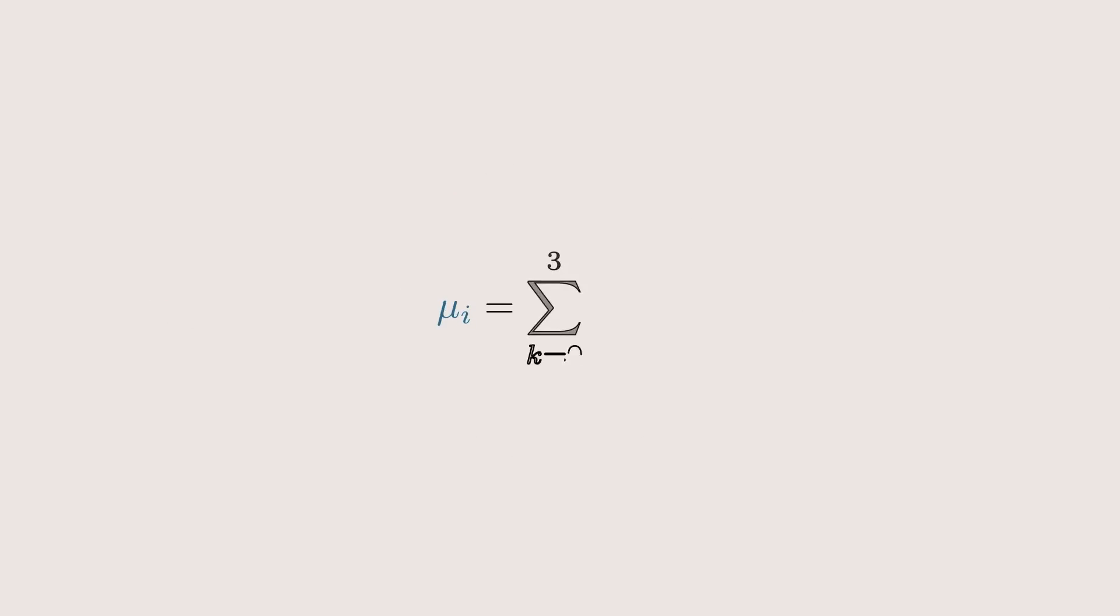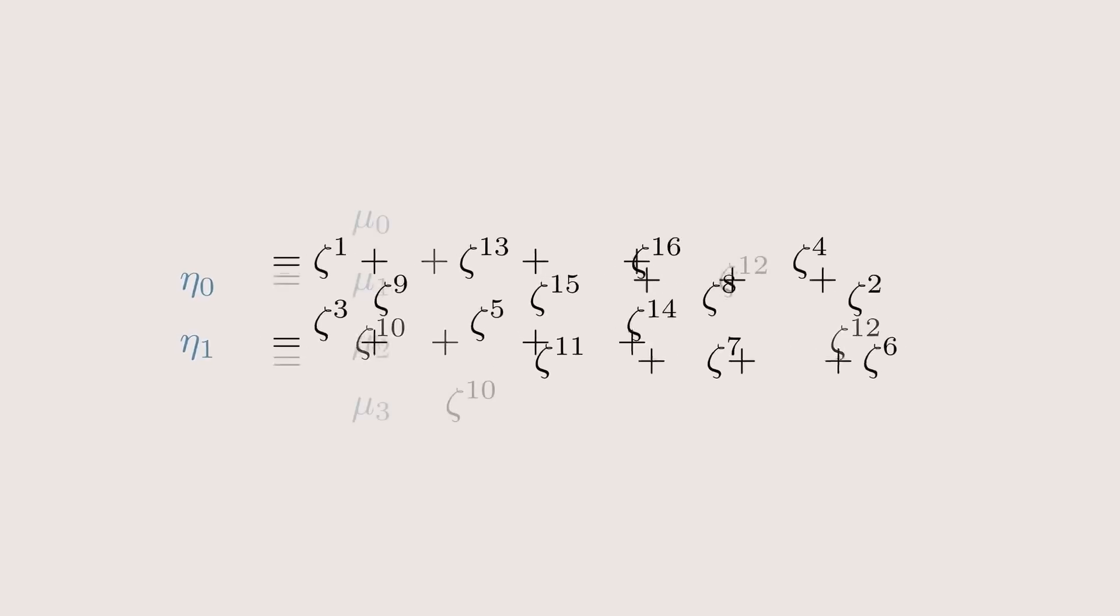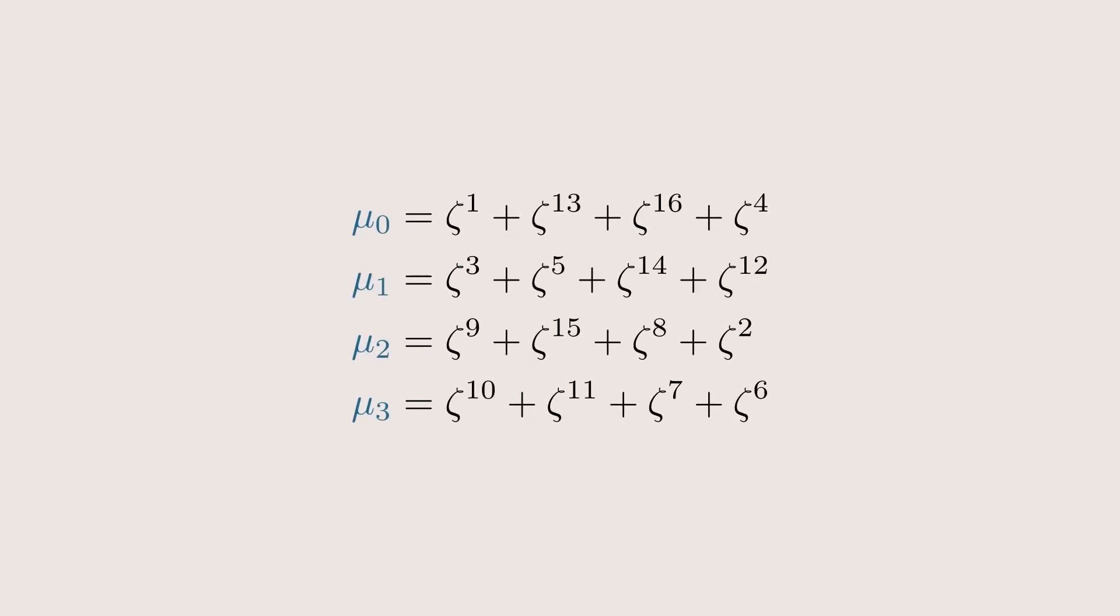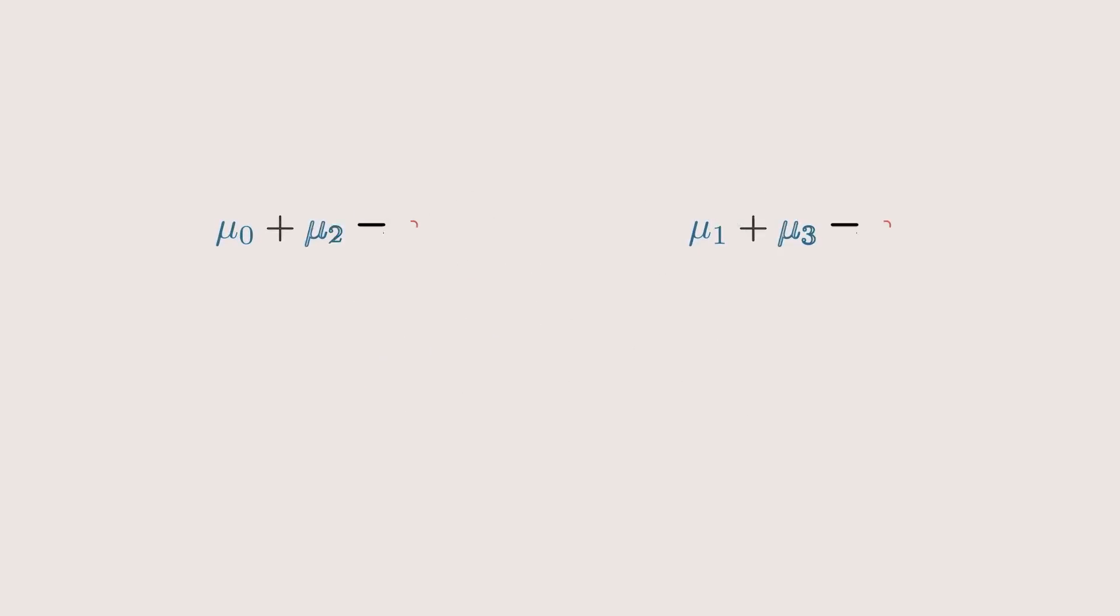Next, we split the etas into μ₀, μ₁, μ₂ and μ₃. They are defined similarly to the etas, that we take every fourth element of these etas. The sum of μ₀ and μ₂ is therefore η₀ and the sum of μ₁ and μ₃ is η₁.